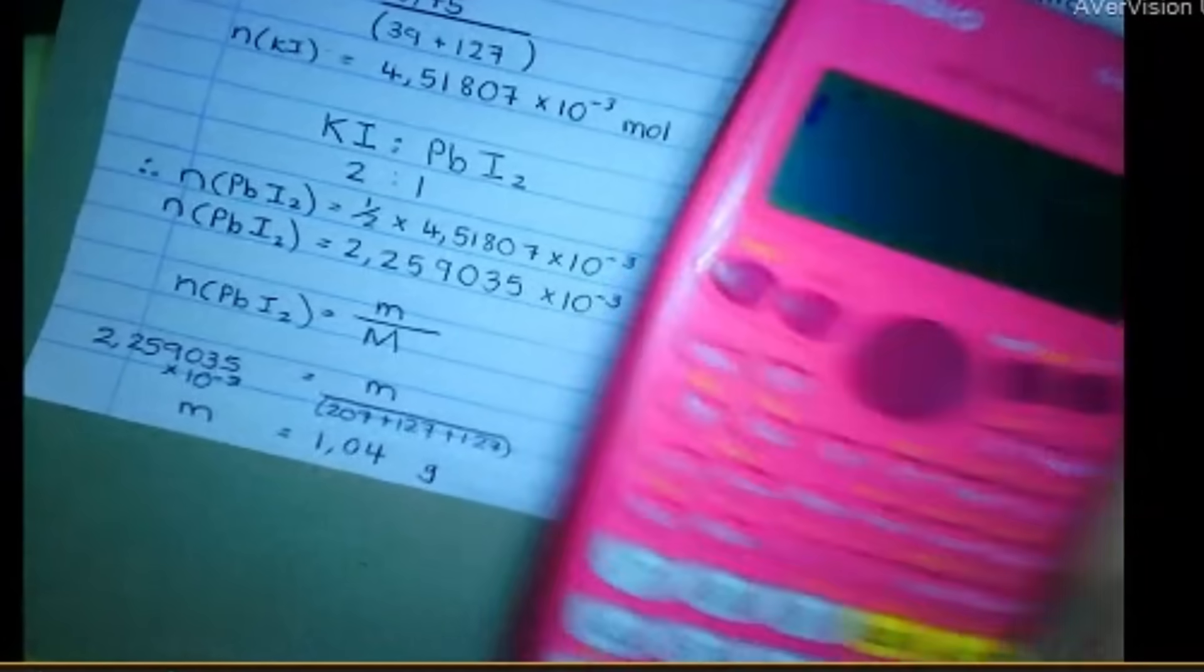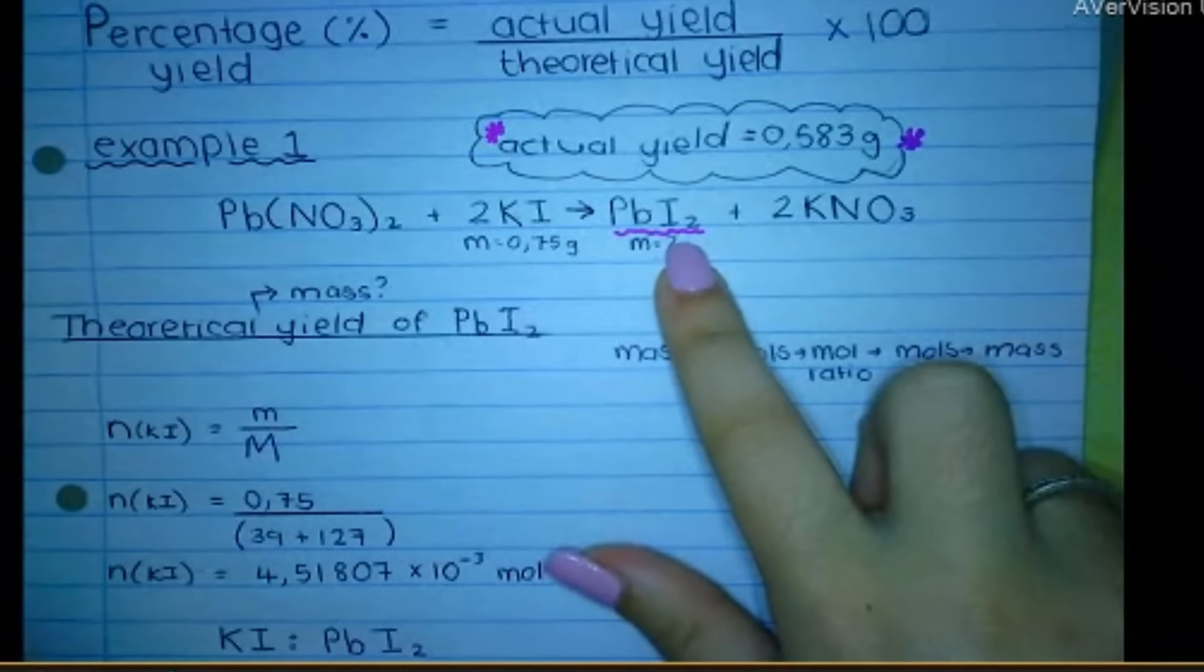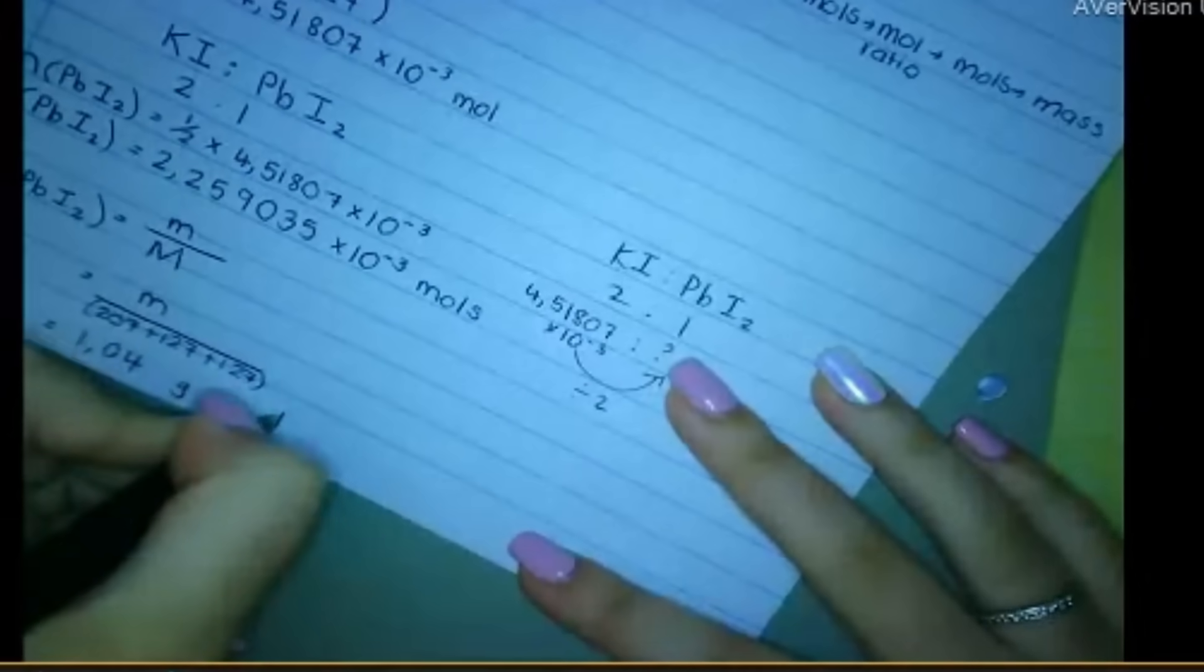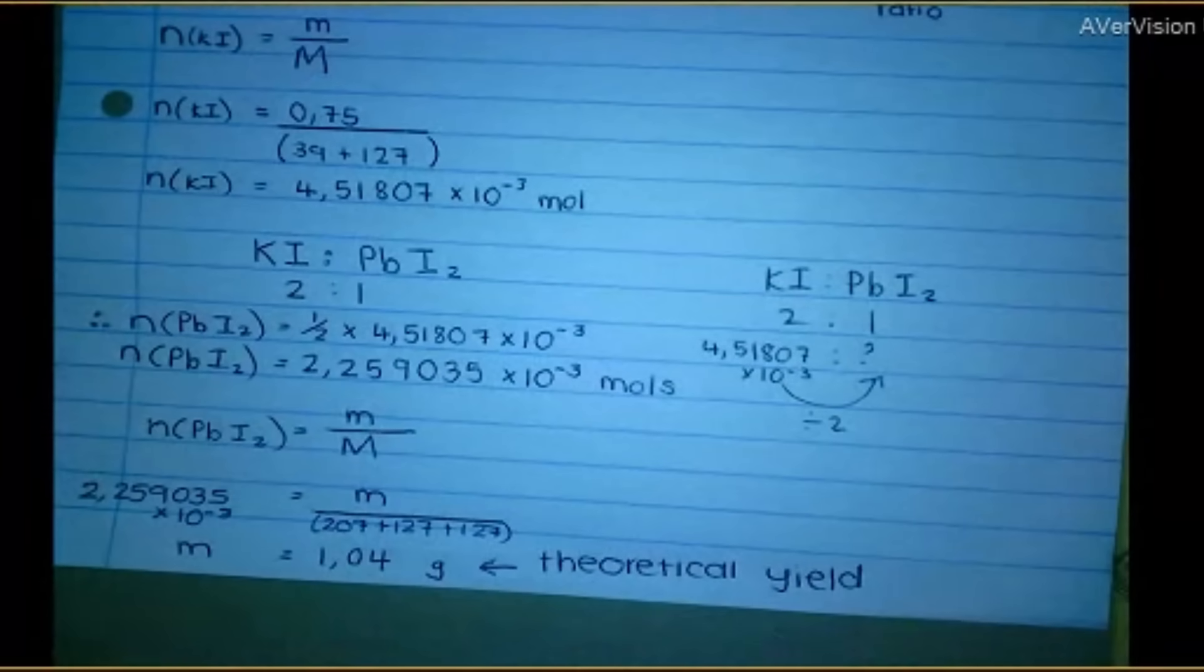Now, I went through all that effort to get the mass of PbI2. That mass that I worked out, this is the theoretical yield in grams. Doing the chemistry, it's what the chemical equations and what stoichiometry says I should be getting at the end of my reaction. So, poor scientist, he goes into the lab thinking he's going to make 1.04 grams because that's what his chemistry books told him.